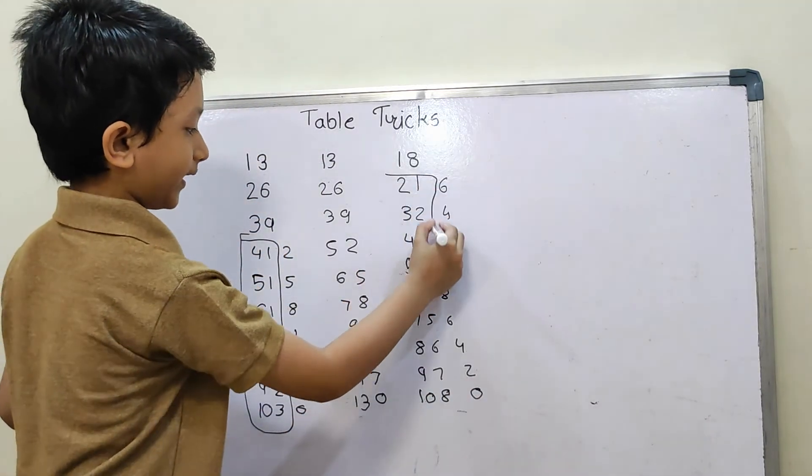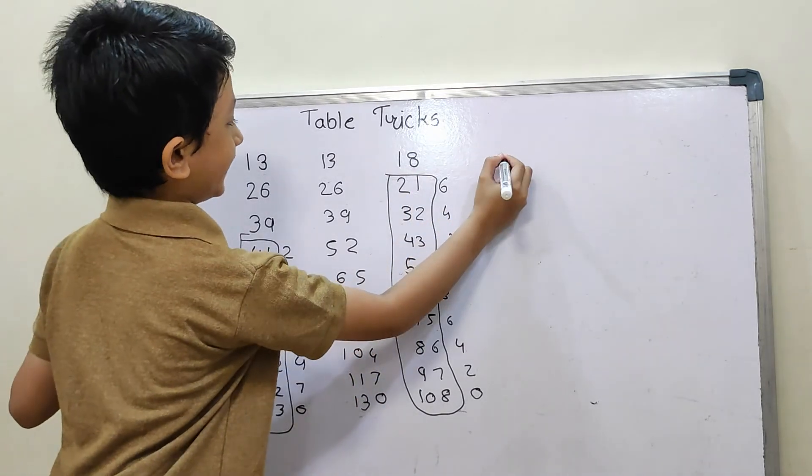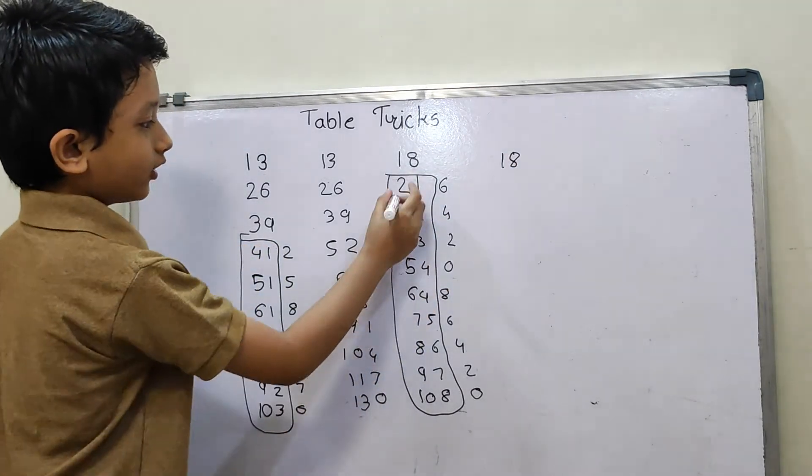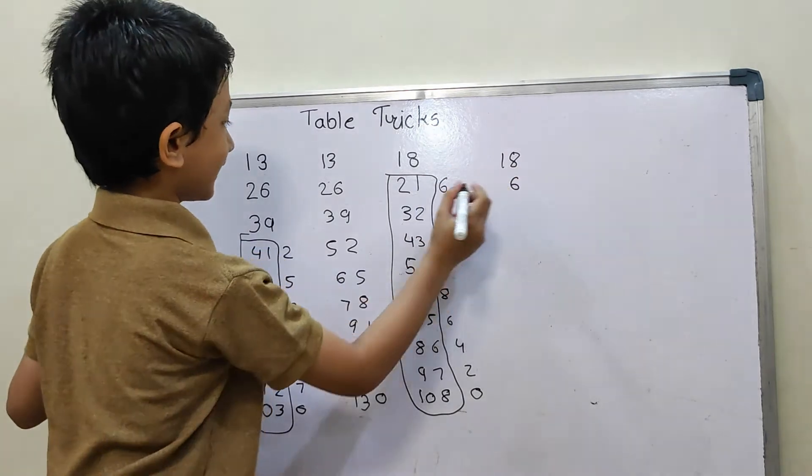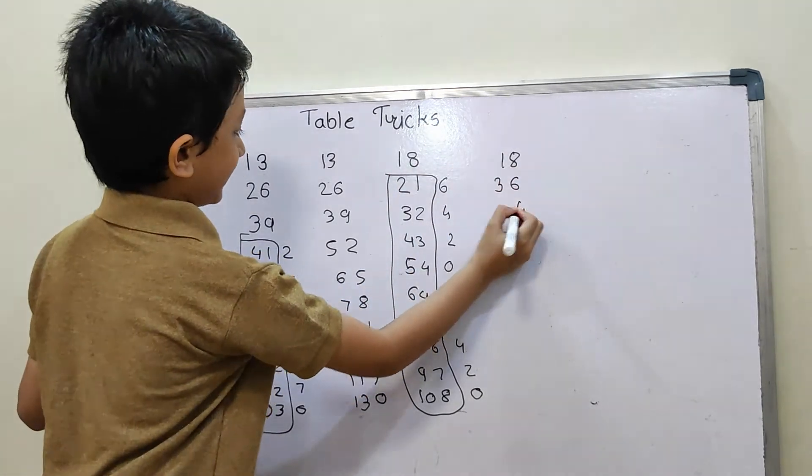Then we have to box one again. So, 18 as it is. Then we have 6 as it is again, and then 2 plus 1 equals 3, 4 as it is.